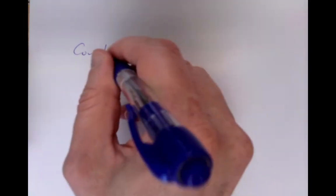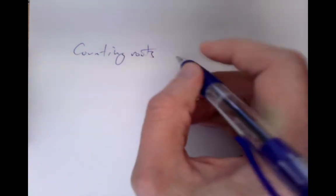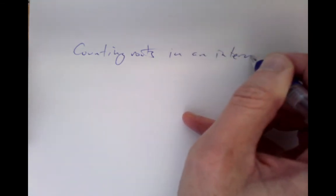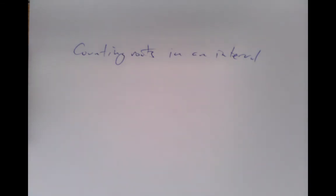You probably learned Descartes' law of signs in secondary school, but it has a simple argument that explains why it works and how the sign changes come along. We now want to think about a more sophisticated technique that actually allows us to count roots in an interval and give an exact number, rather than a number up to subtracting off even multiples.